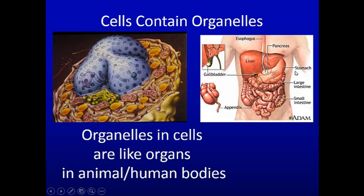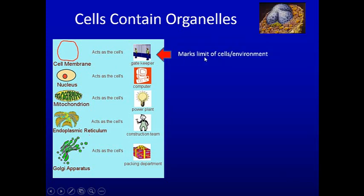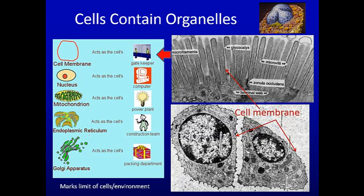Cells contain organelles like the body contains organs — organelles in cells are like organs in the human body. The various organelles include the nucleus with nuclear pores and DNA, the Golgi apparatus, mitochondria, the plasma membrane, nuclear membrane, and rough endoplasmic reticulum. The cell membrane is the gatekeeper — it marks the limit of the cell and separates it from its environment. Here we see two cells that have just divided, separated by their plasma membrane, and intestinal surface cells where the plasma membrane is pushed up by actin filaments.